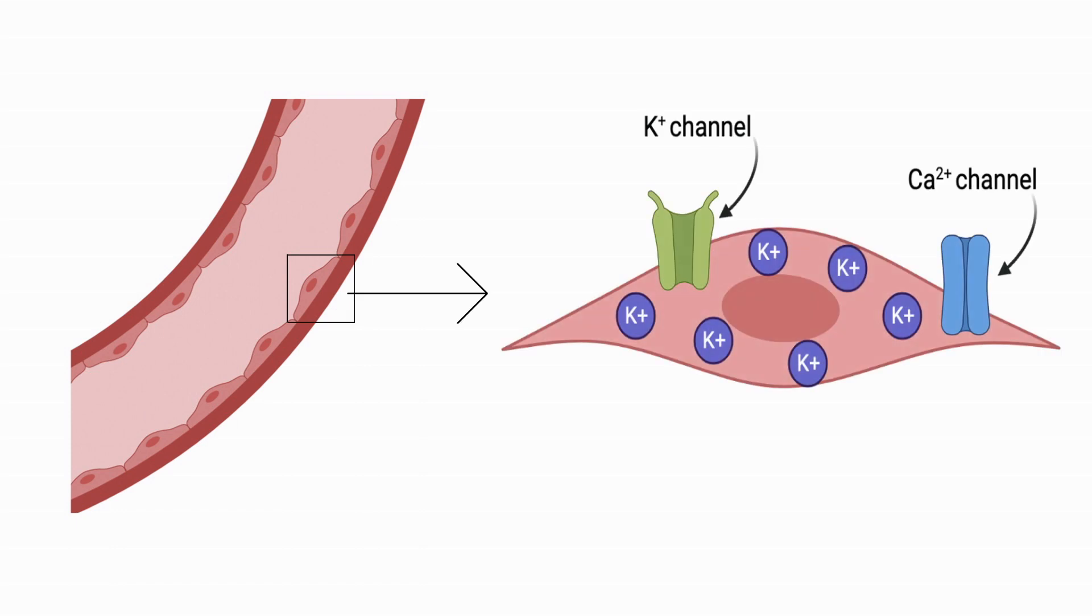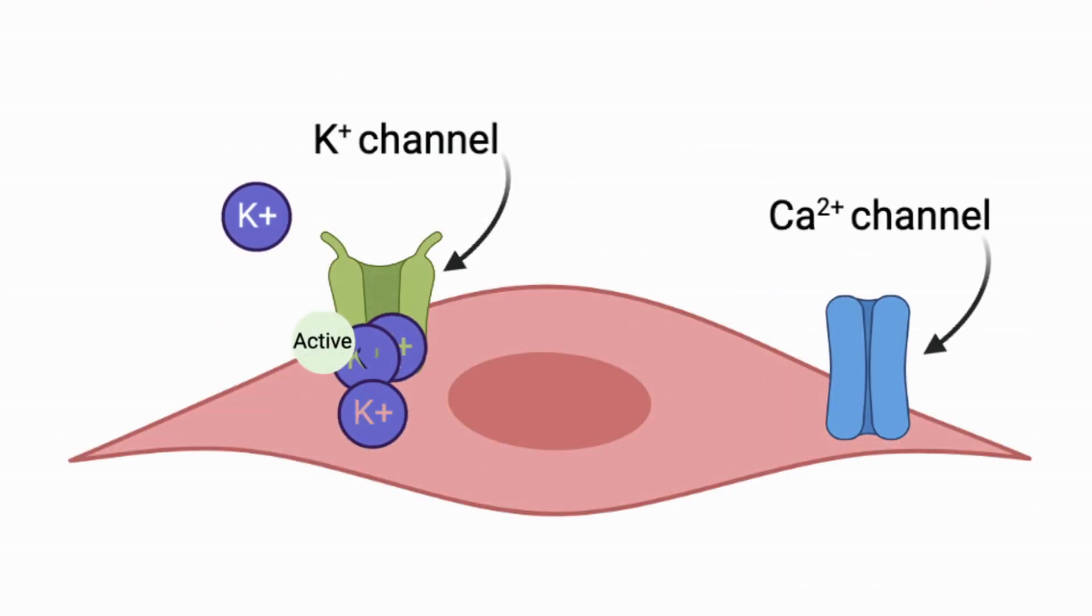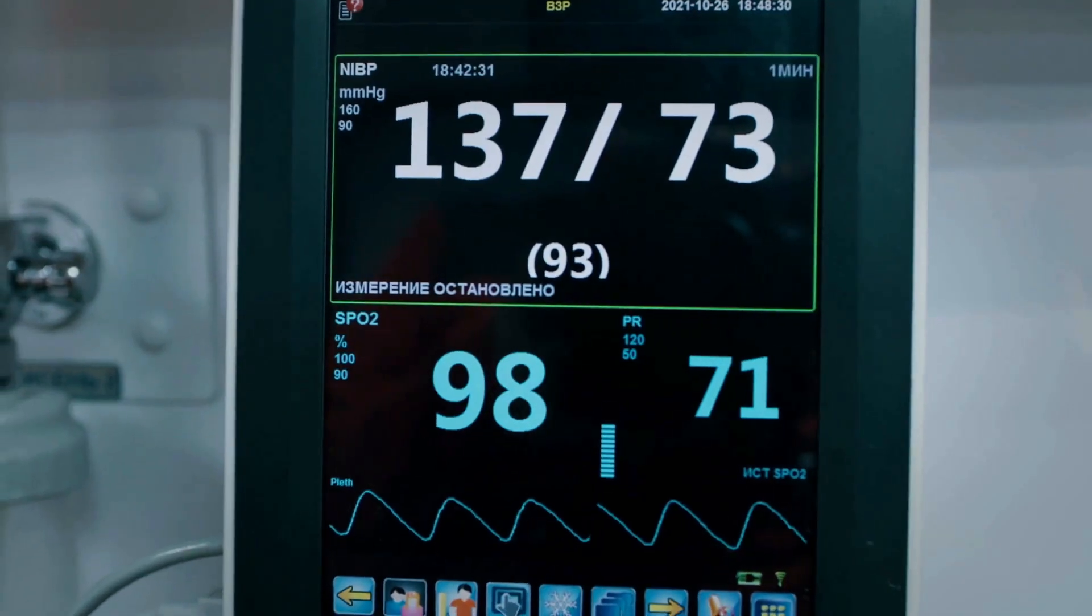When we take a closer look in the smooth muscle cells where all the magic happens, when the potassium channel is activated, positive potassium ions leak out of the cell, changing the membrane potential and inactivating calcium channels, which prevents contraction. This process is impaired in hypertension.